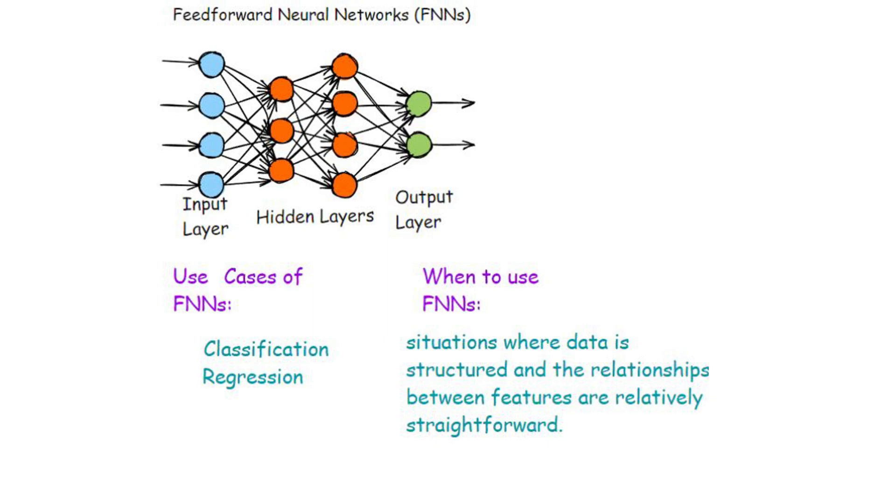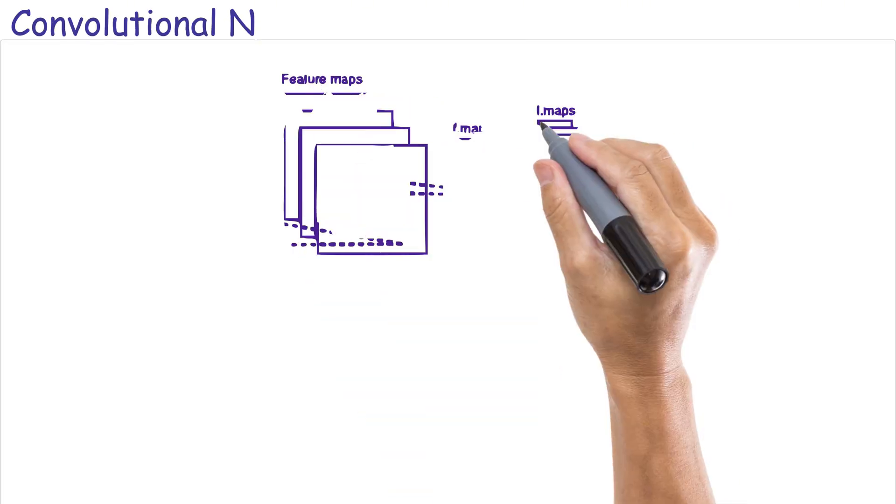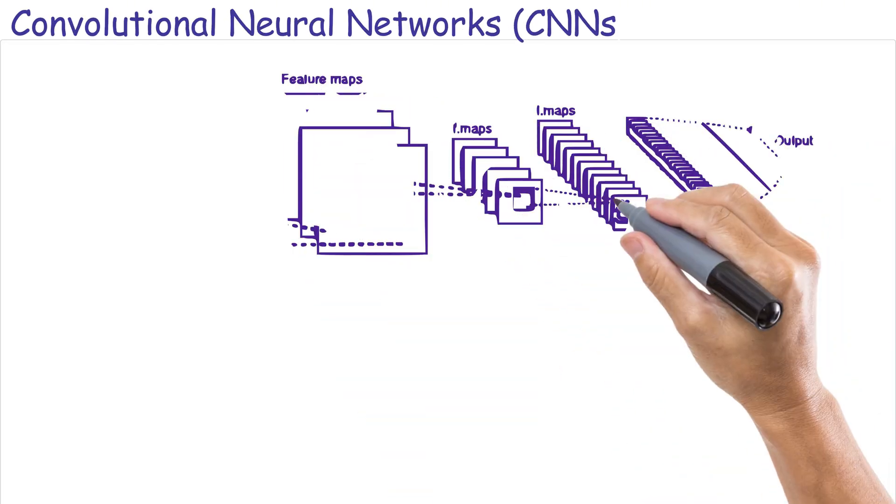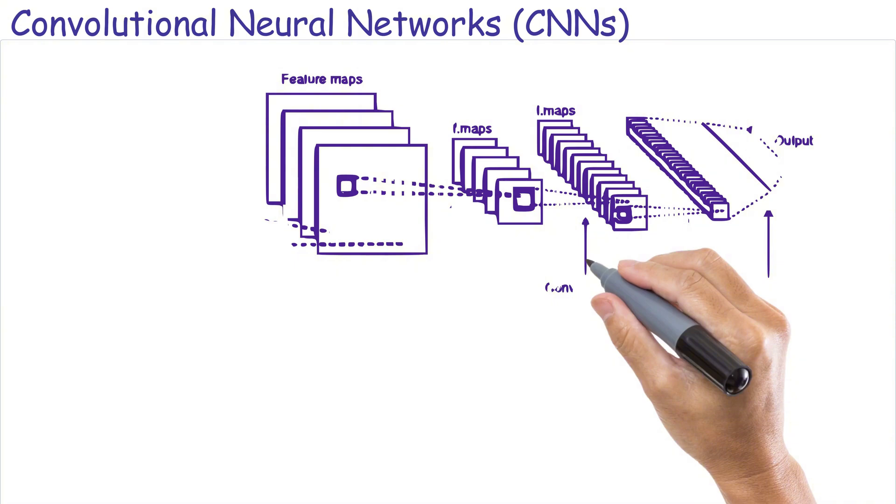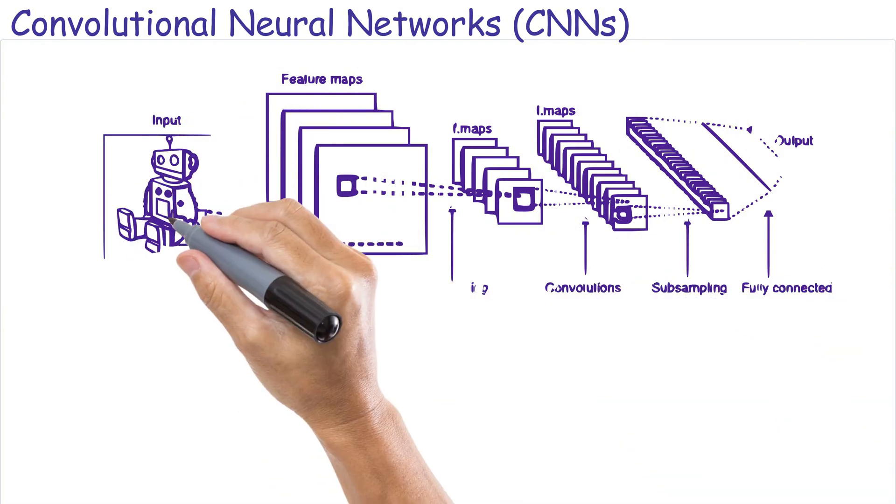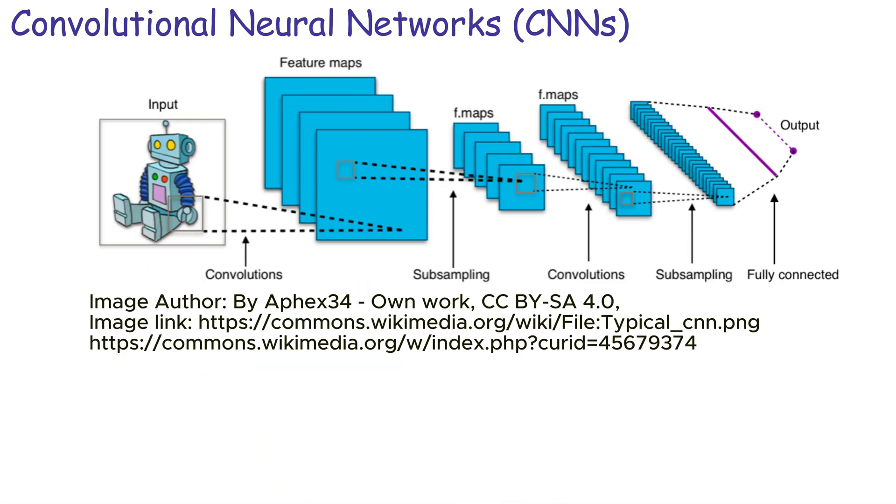Convolutional Neural Networks or CNNs. Convolutional neural networks are designed to process data with a grid-like topology, such as images. CNNs use convolutional layers, pooling layers, and fully connected layers to extract and learn spatial hierarchies in the data.